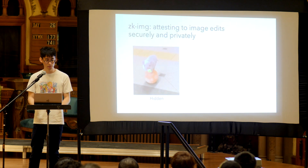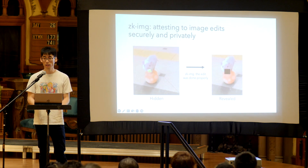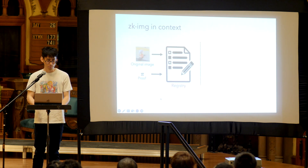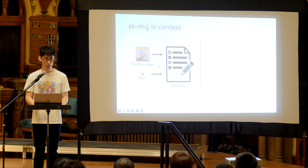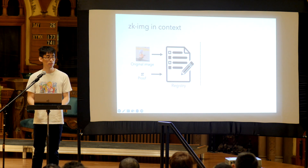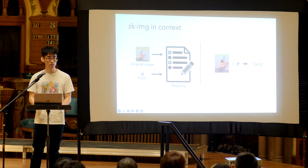We developed a framework, ZK Image, to attest to image edits securely and privately. Given a hidden input image, we can pass it through our library and reveal the edited image. To put ZK Image in context, we also need a registry which has hashes of the original image — or commitments to the original image — along with the signatures from the attested cameras. The image taker and image editor upload proofs to the registry, and when a consumer wants to verify that an edited image came from the original, they can look up the registry and verify the original image commitment, signature, and proof of the image edits.